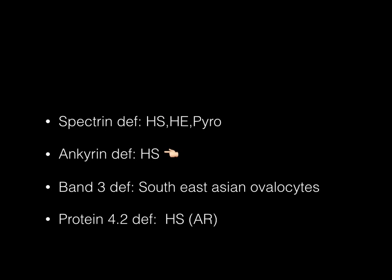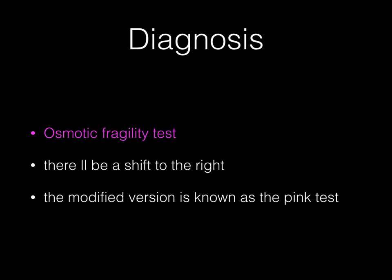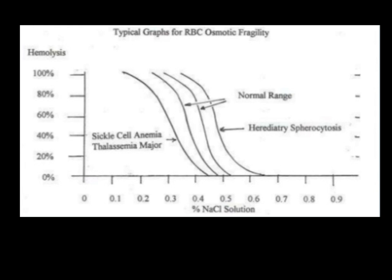So how do you make a diagnosis when you see a spherocyte in the peripheral smear? The first test that you do is the osmotic fragility test, which will show a shift to the right in any condition which has a spherocyte.